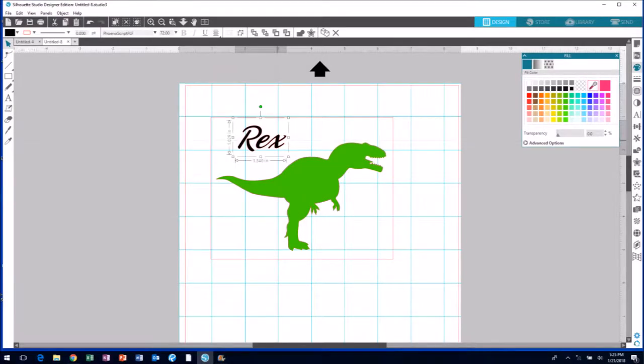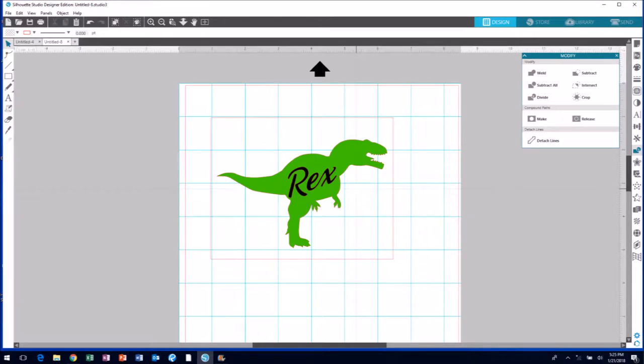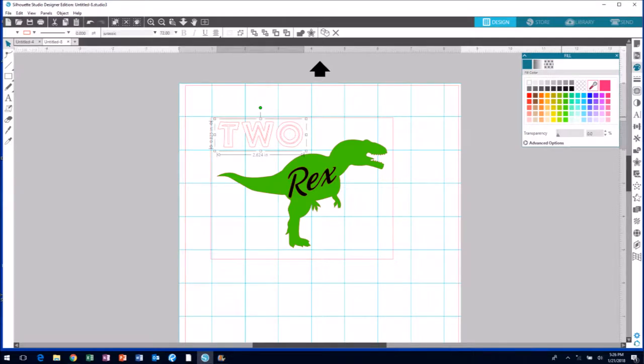I'm going to add my text with the word Rex in Phoenix Script FLF. Use the merge tool and then the rotate tool and just drop that right in on the T-Rex. Then I'm going to add my two, and this is a font called Jurassic which looks just like the Jurassic Park logo. Add that offset to create a shadow behind it and I'm ready to go.